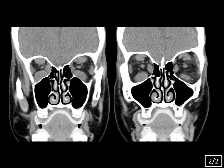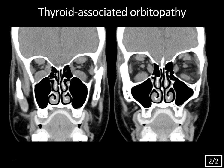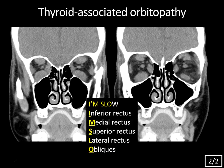This is much easier to see on the coronal images — marked thickening of the extraocular muscles and fat stranding within the orbital fat. This is typical for thyroid-associated orbitopathy, also known as Graves' ophthalmopathy. It's the most common cause of proptosis in adults and is typically associated with Graves' disease. On imaging you get bilateral symmetric enlargement of the extraocular muscle bellies with sparing of the tendinous insertion. The mnemonic is 'I'M SLOW': Inferior rectus first, then Medial, then Superior, then Lateral, then Obliques.